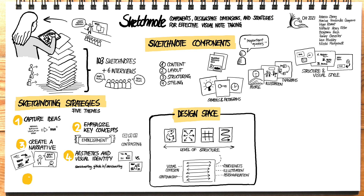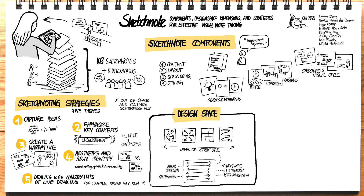Finally, the fifth set of strategies has to do with the constraints of live drawing. For example, people may run out of space and need to make addendums in different places, or they may revisit earlier content to finish it when there is a small break during the talk.